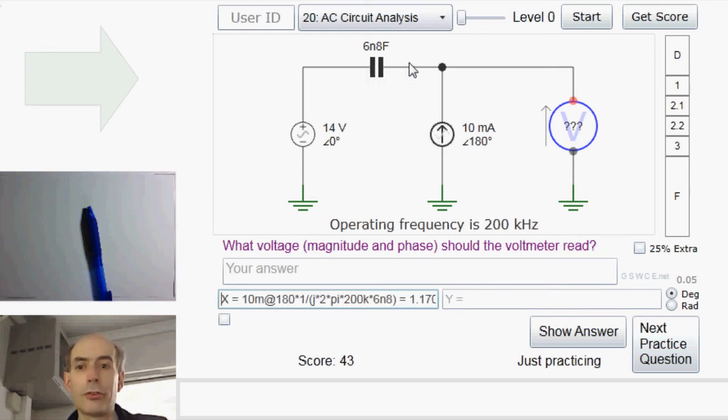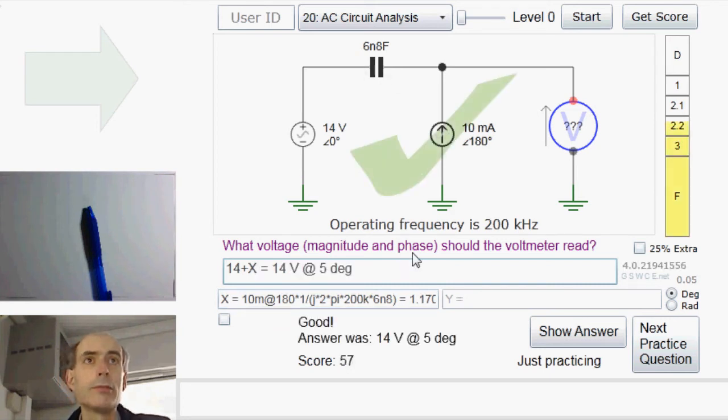And that's going to be the voltage across this capacitor. And because the current is flowing this way, this will be the higher voltage, this will be the lower voltage. So the total voltage across this voltmeter will be this 14 volts, plus the voltage across this capacitor. So that's just going to be 14 volts. I don't have to type in the phase because it's 0, plus x, because x is currently the voltage across this capacitor.